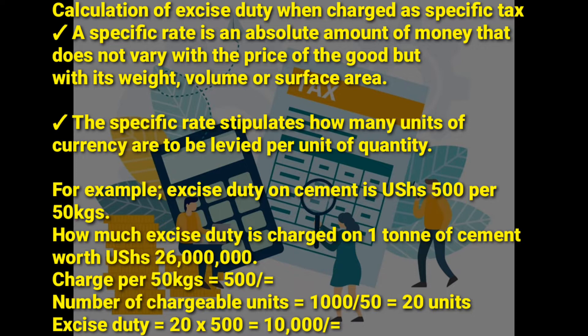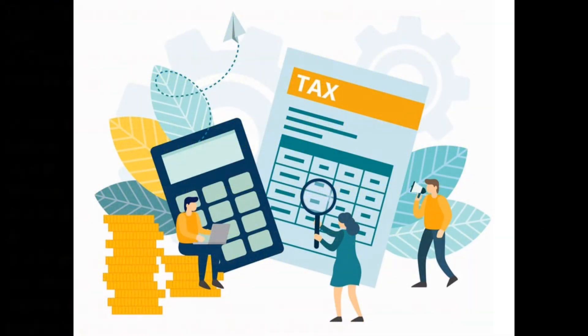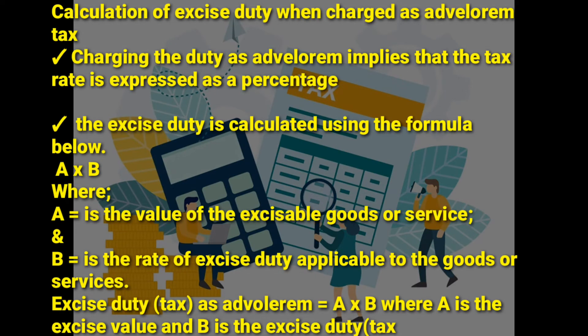To get the excise duty, we multiply the specific rate by the number of chargeable units. The number of chargeable units is 20 and the specific rate is 500. When we multiply we get 10,000, and that is the excise duty that will be charged on one ton of cement.